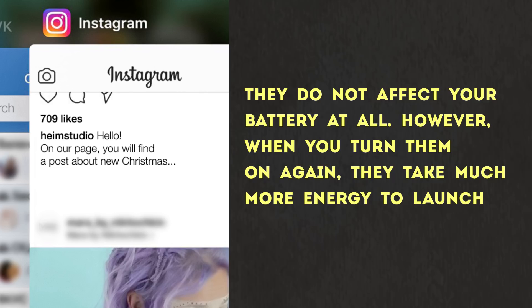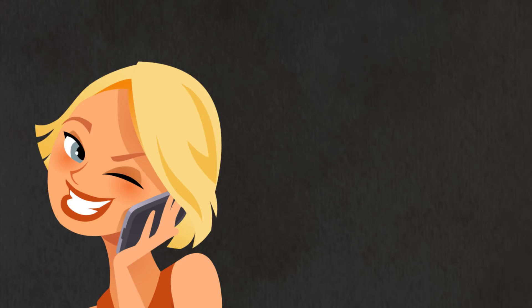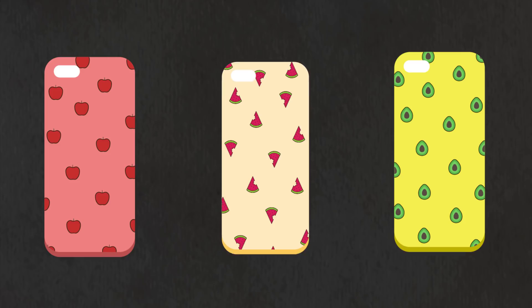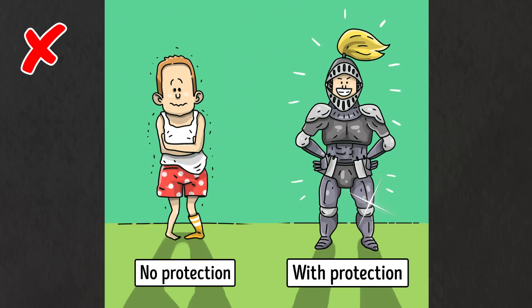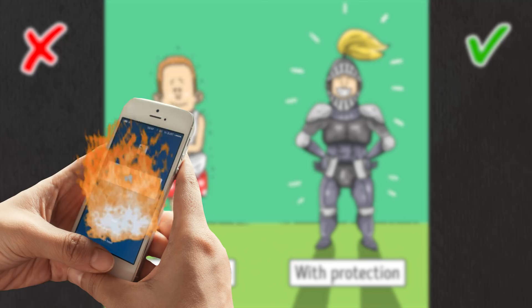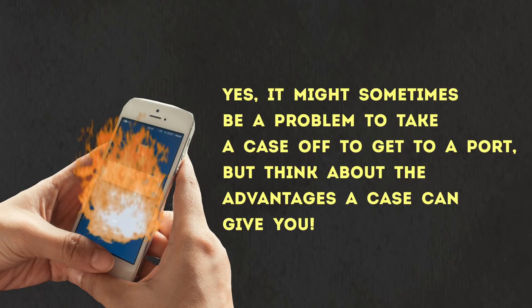Number 8: Choose a protective case that covers all the important ports. Nowadays, you can find multiple protective cases anywhere you go, with characters from your favorite cartoons, inspiring quotes, your favorite celebrities, cute patterns, and many more creative images. But choosing a case for your phone based on its look is a wrong approach. When it comes to protective cases, you should be practical. A case that covers important ports will save you from having to clean your iPhone and decrease the risk of burning your charger because the port was full of trash. Yes, it might sometimes be a problem to take a case off to get to a port, but think about the advantages a case can give you. They are way better than any possible fun patterns. By the way, you can also check out another video to see how you can prolong the life of your phone. It's way easier than you'd think.